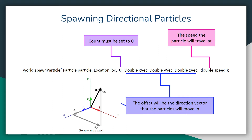That is going to be the directional vector, and you can see that visualized in the image at the bottom where you start at your origin and then you have your offset in the X-axis, your offset in the Y-axis, and your offset in the Z-axis. You just create a line that shoots off in that direction — that is the final direction vector. Your last parameter will also be the speed, or the speed that the particle will travel.